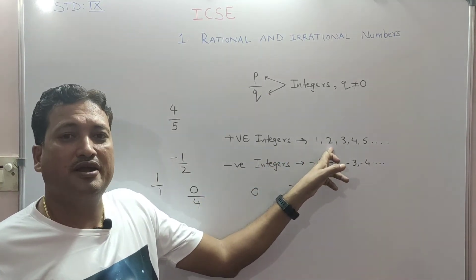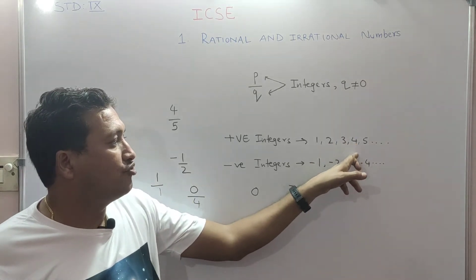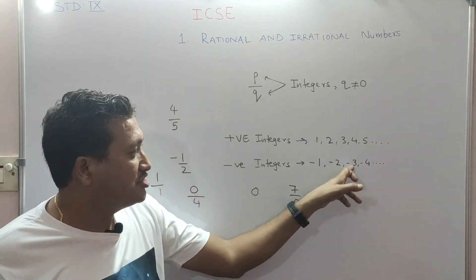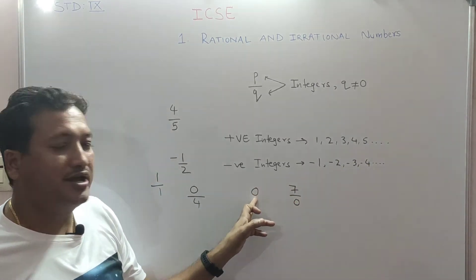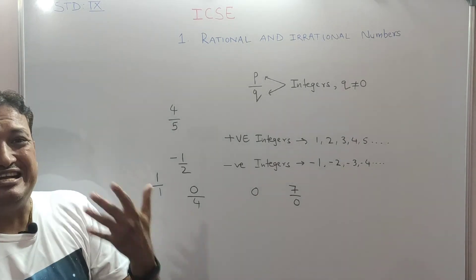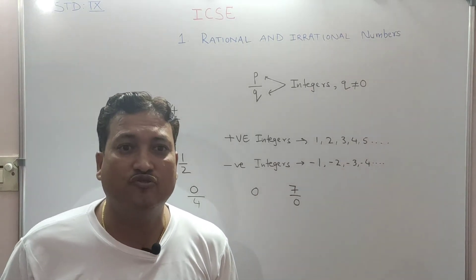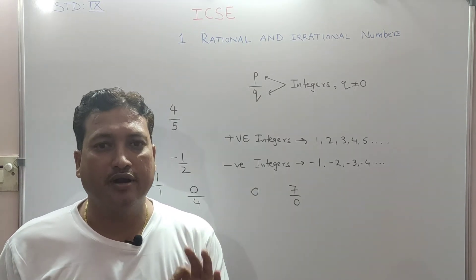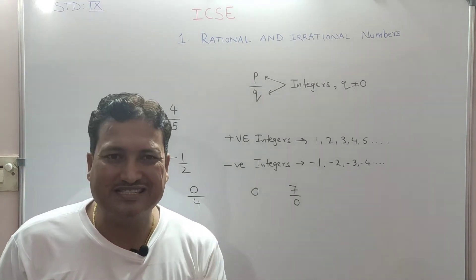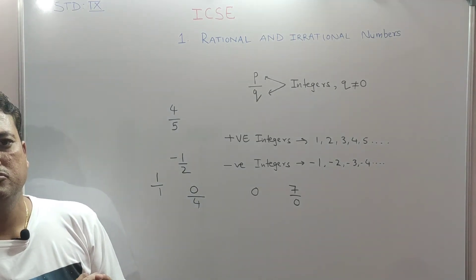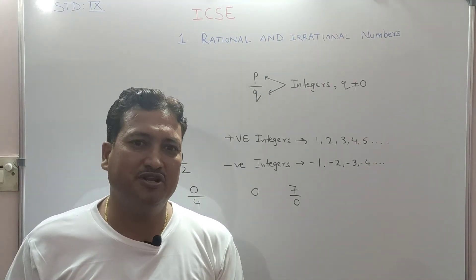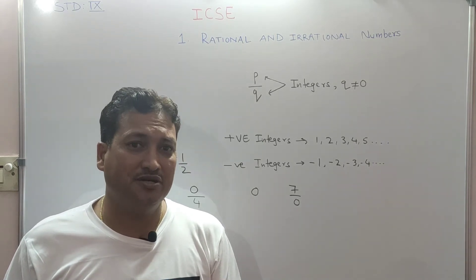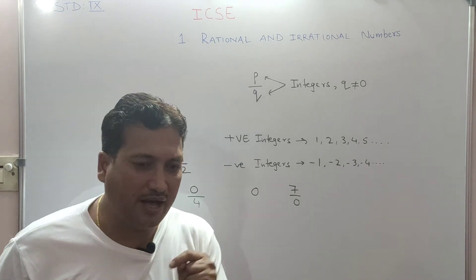Similarly, 2 can be written as 2 upon 1, 3 as 3 upon 1, 4 upon 1, 5 upon 1, and so on. For negatives: minus 1 upon 1, minus 2 upon 1, minus 3 upon 1, minus 4 upon 1. And 0 can be written as 0 upon 1. So every integer can be expressed in the form of P upon Q — hence all integers are also rational numbers. The decimal form of a rational number may be terminating or non-terminating but recurring.